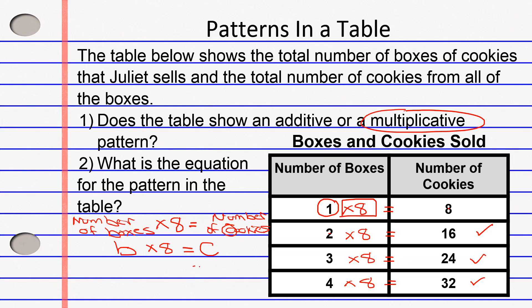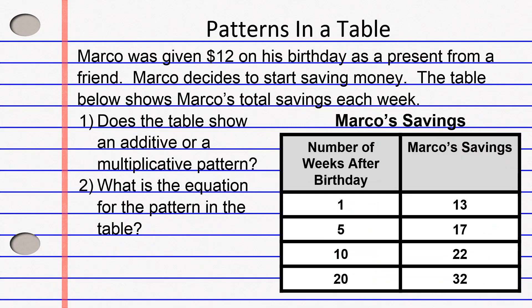Let's take a look at our second example. Marco was given $12 on his birthday as a present from a friend. Marco decides to start saving money, and the table below shows Marco's total savings each week. The title of the table is Marco's Savings. On the left-hand column, it shows the number of weeks after Marco's birthday, and on the right-hand column, it says Marco's savings. The number of weeks are 1, 5, 10, and 20, and Marco's savings are 13, 17, 22, and 32.